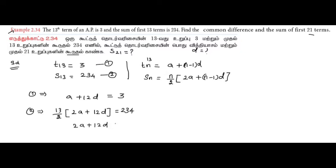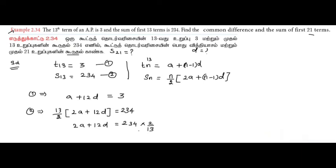So this is 13 by 2 on the other side. Dividing, we get 2a plus 12d equals 36. So we have the two equations: a plus 12d equals 3 and 2a plus 12d equals 36.